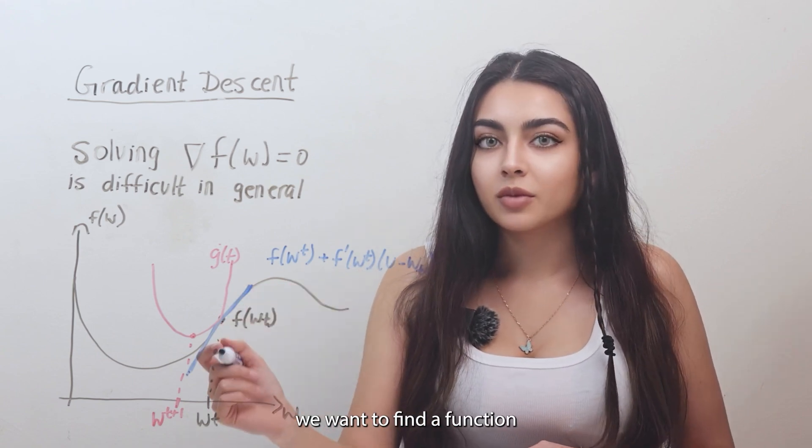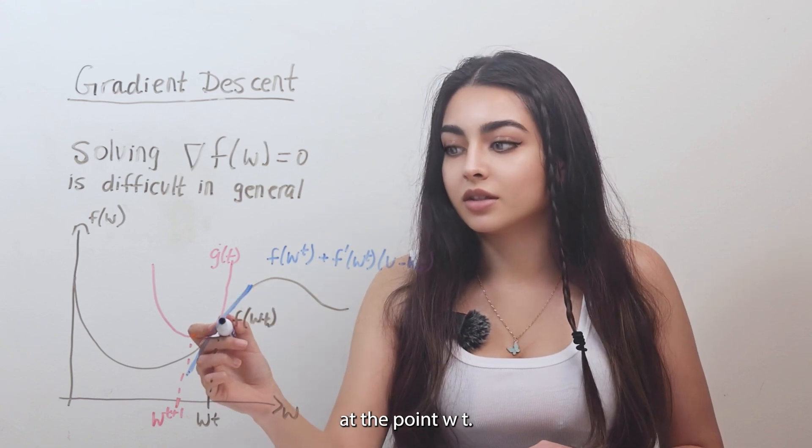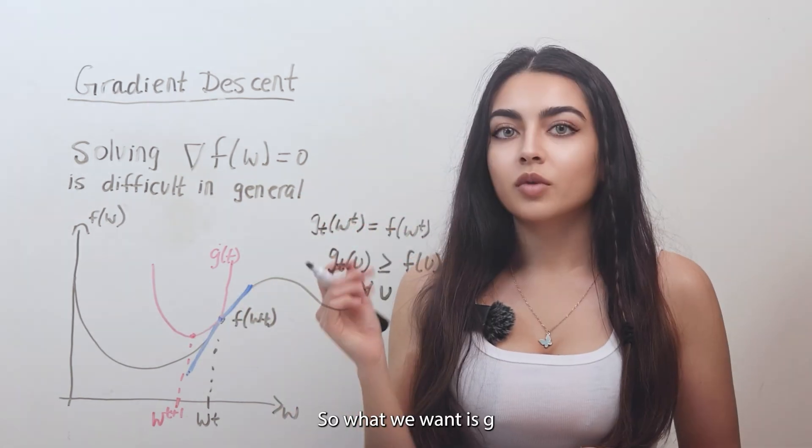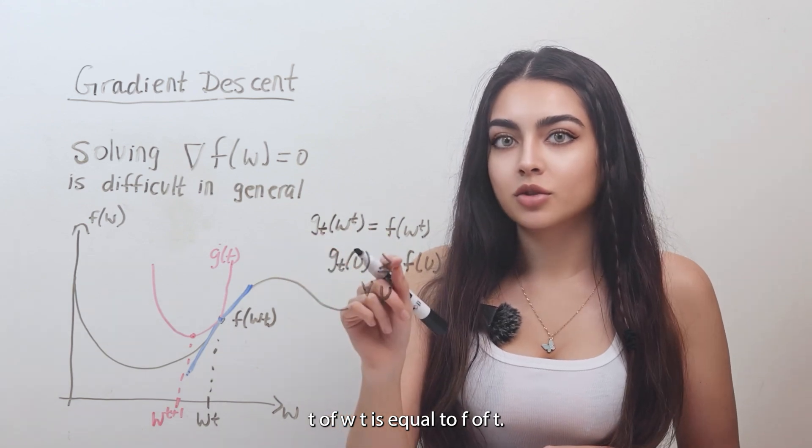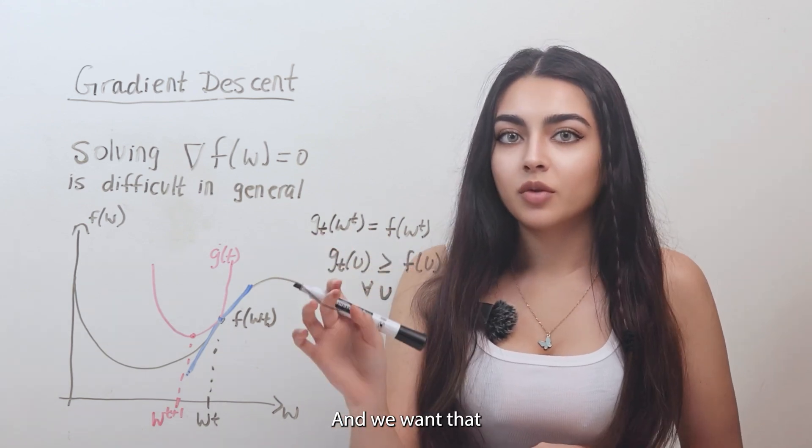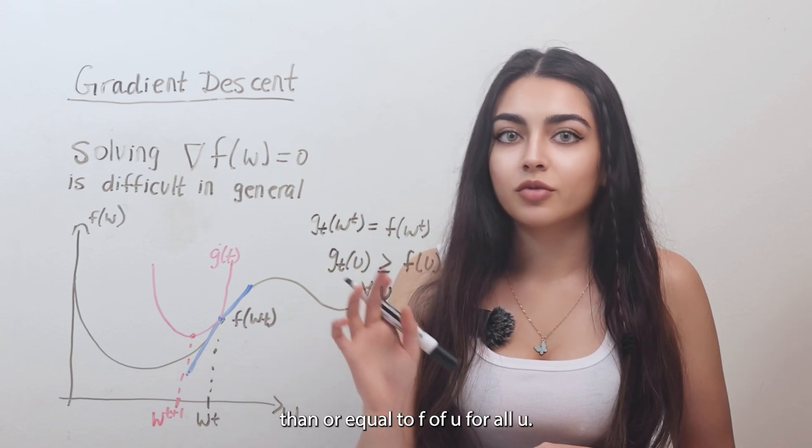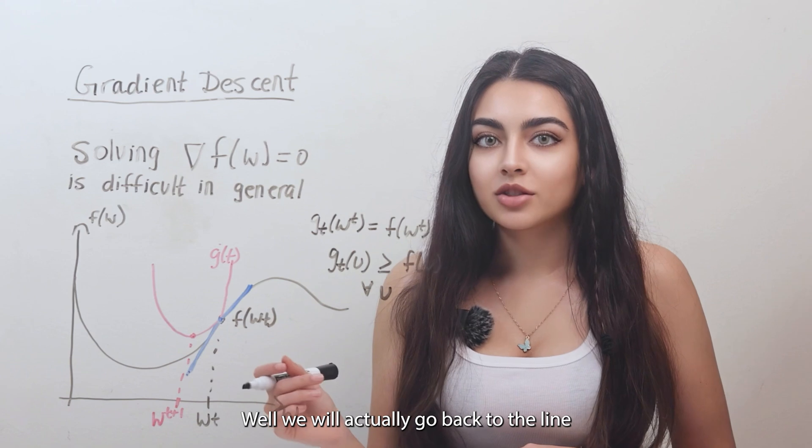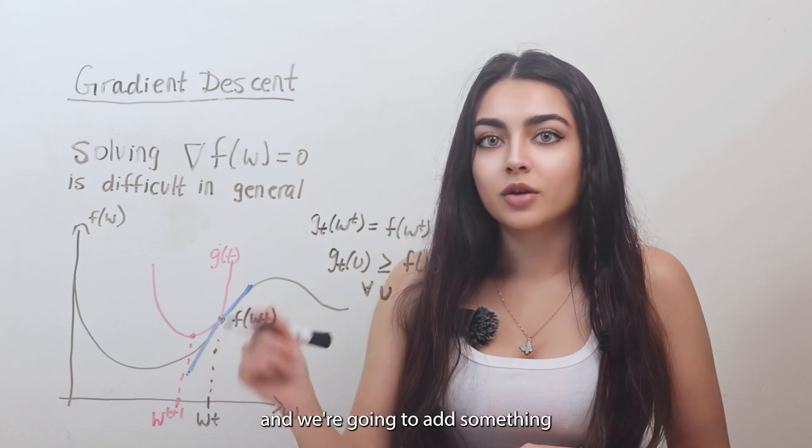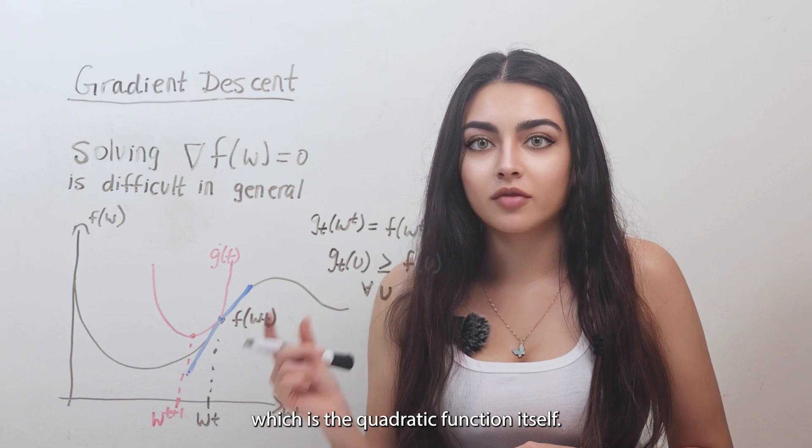But instead of that line, we want to find a function that touches my function at the point wt. So what we want is gt of wt is equal to f of wt. And we want that gt is always greater than or equal to f of u for all u. And how we are going to achieve this exactly? Well, we will actually go back to the line and we are going to add something to the equation of that line, which is the quadratic function itself.